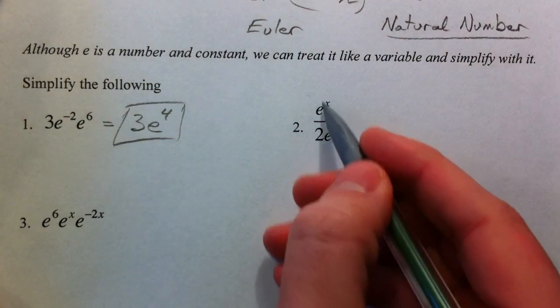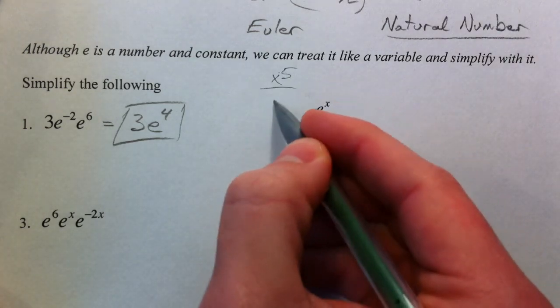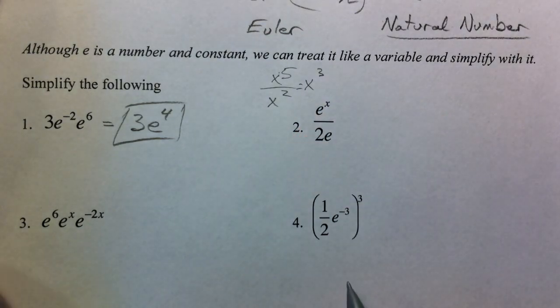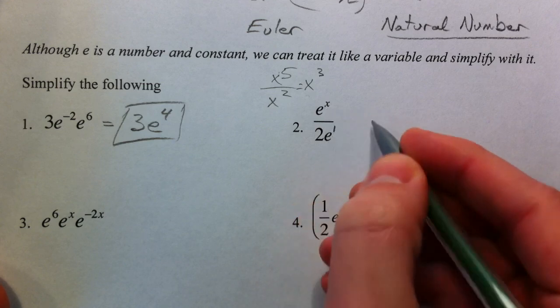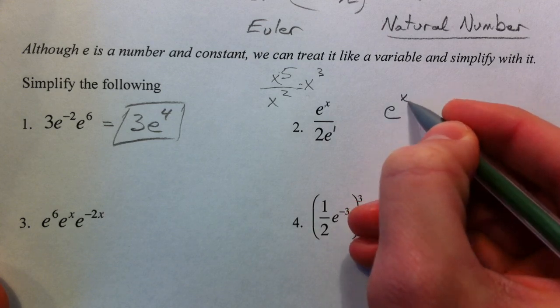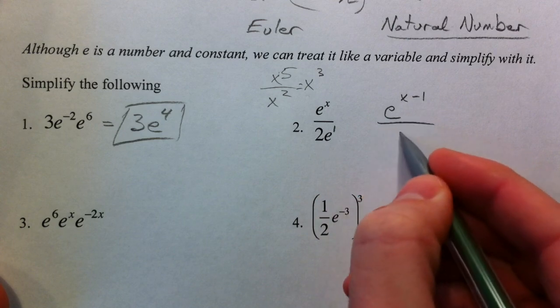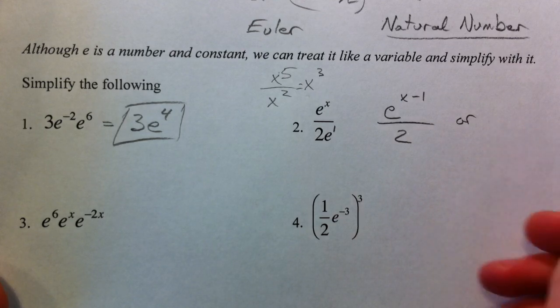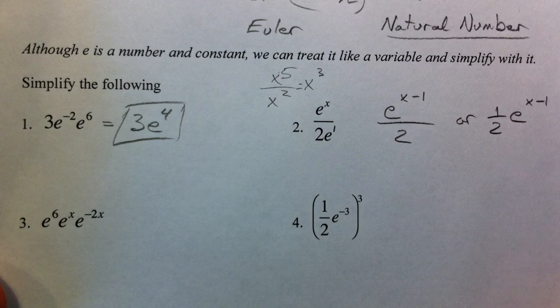And so we're just using properties of exponents. What's going to change a little bit here is think if you had X to the fifth divided by X squared. You would subtract those two exponents and get X to the third. Now you have E to the X divided by E to the first. And so you're going to have E to the X minus 1. Subtract the two exponents again. And the 2 is disconnected from the E, so you can write it like this, or as 1 half E to the X minus 1. Either one of those, it doesn't matter.